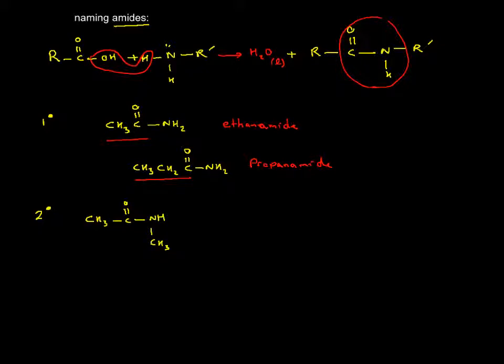So what we are going to do is call this other little branch with attachment of italic N, N-methyl for that attachment, then finish it with the ending which is the longest chain: ethanamide.